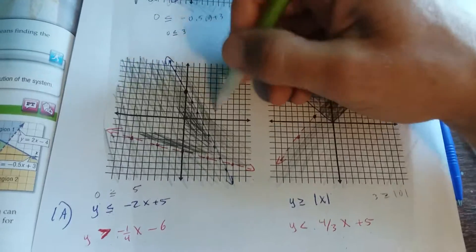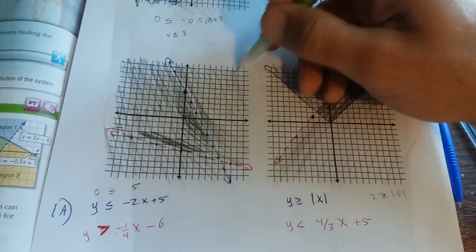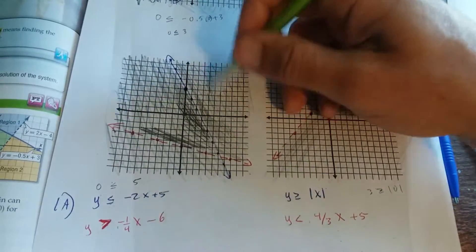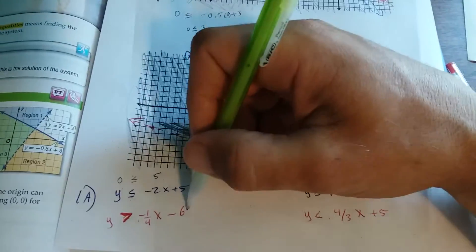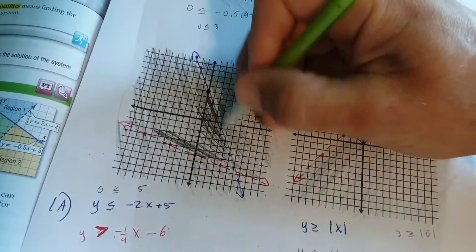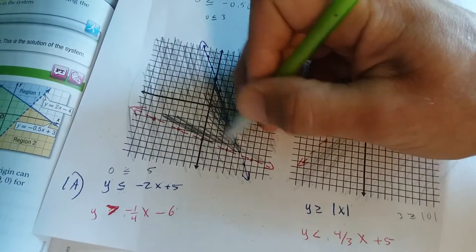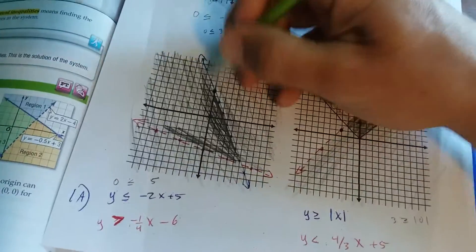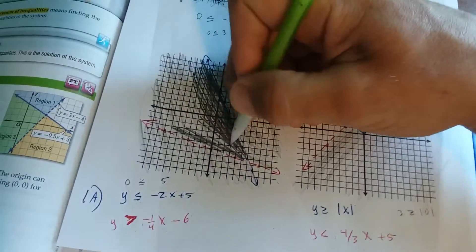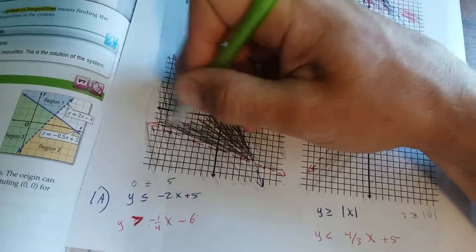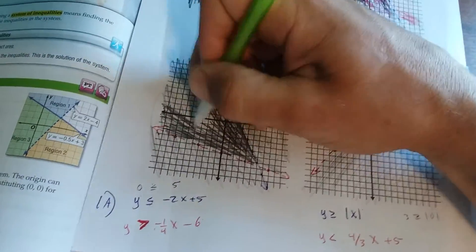So this area right here is only a solution to the inequality down here, but this area that's gonna be dark right here, this triangular region here, is the solution to both inequalities and therefore the solution to the system of inequalities.